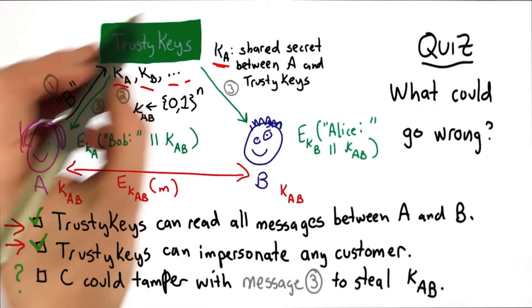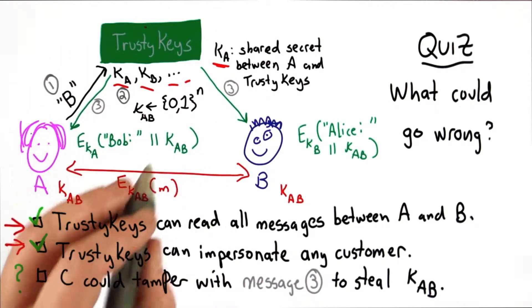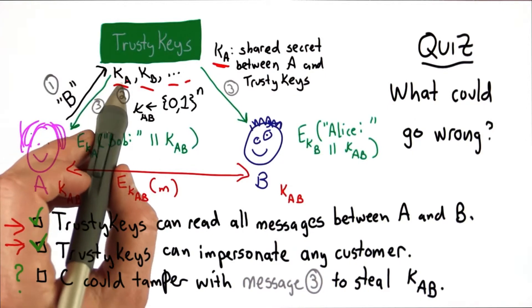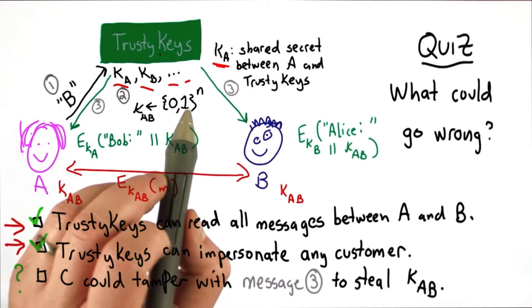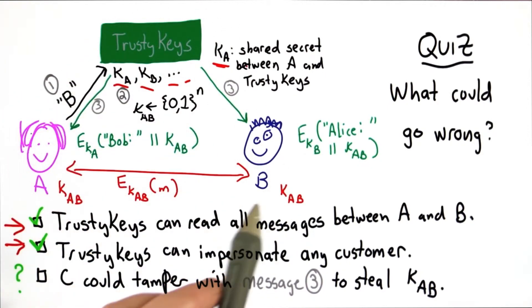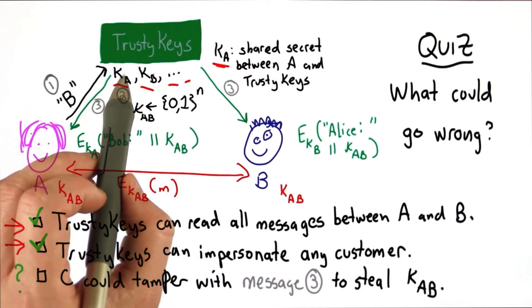So we haven't really solved our problem. This would only work if everyone completely trusted trusty keys, which seems unlikely even with a green box, and if there was a secure way for everyone to establish a shared secret key with trusty keys.